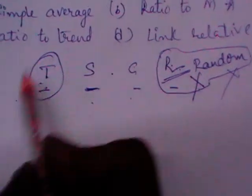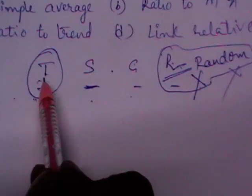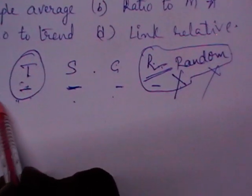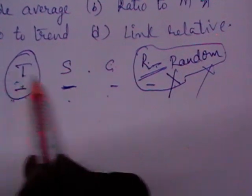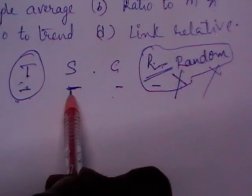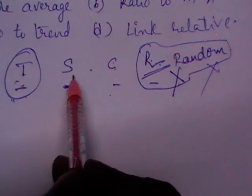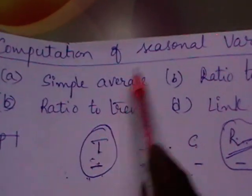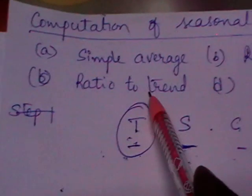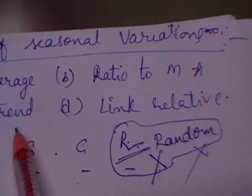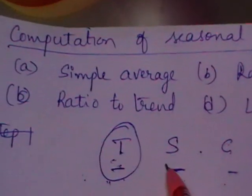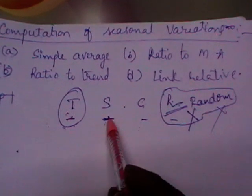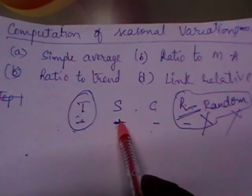The other three components are trend, for which we have different methods like graphical, semi averages, moving averages, and principle of least squares, which we have already discussed. The second component is seasonal variations, and we have four methods for measuring them: simple averages method, ratio to moving averages, ratio to trend, and link relatives methods. After measuring the seasonal variations, those can be eliminated from the time series data.